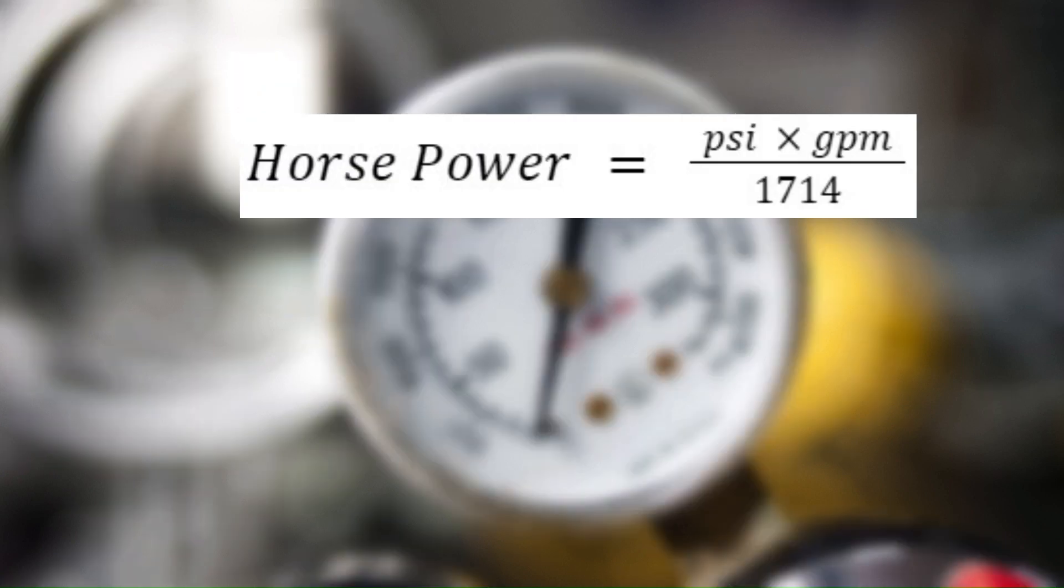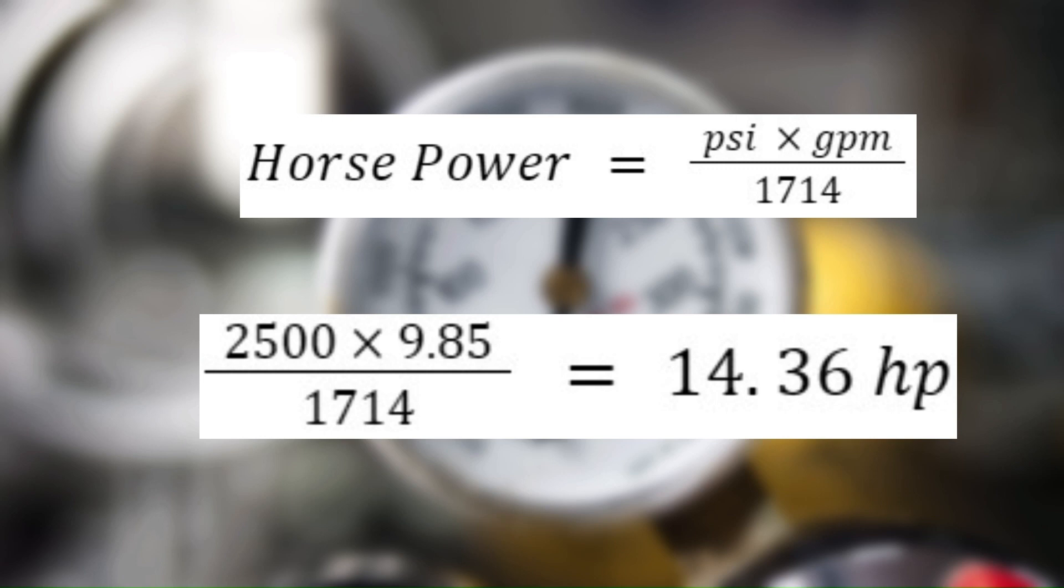We can now use this equation to calculate the required horsepower to run the pump. Doing this math, we get 14.36 horsepower. Since motors don't come in the 14.36 horsepower size, we would round up to a 15 horsepower motor.